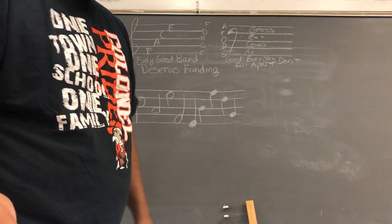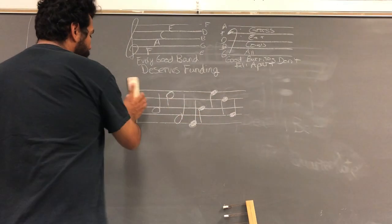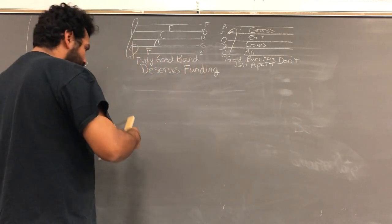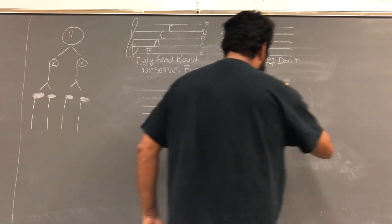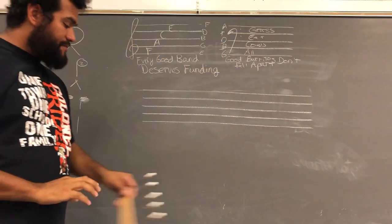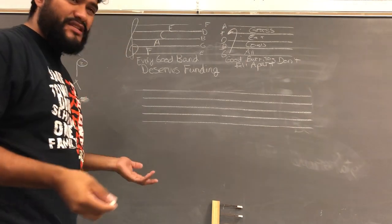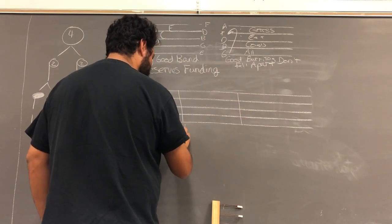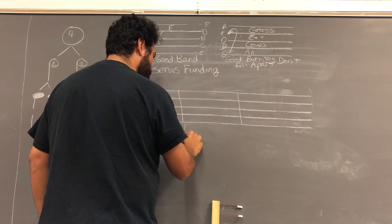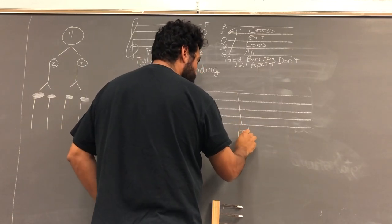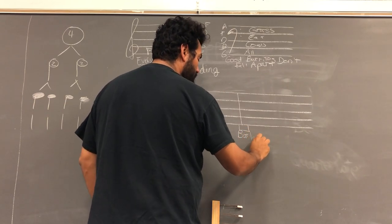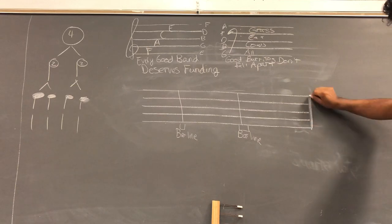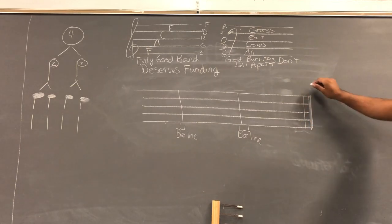Measures and bar lines. On our five line staff, music is divided into measures by bar lines. Bar lines are just like how they sound. They're just lines. They go from the top line to the bottom line. Now usually, a piece of music is done or finished with a unique bar line. It's called a final bar or a double bar. And it looks like this. One thick line, one skinny line. That's the final bar.